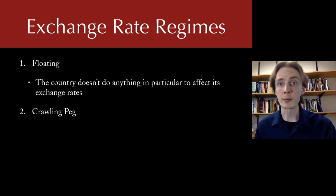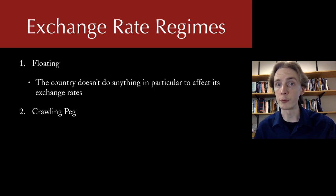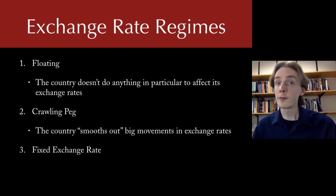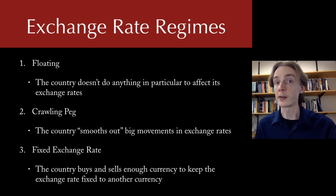The second type of regime is called a crawling peg. A crawling peg is where the government doesn't worry too much about exchange rate movements, but if things get too out of whack it'll step in and try to smooth out major fluctuations. Finally, the third type is called a fixed exchange rate, where the government basically cares only about the exchange rate to the exclusion of a lot of other things.